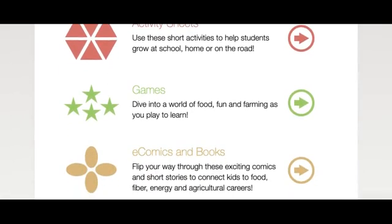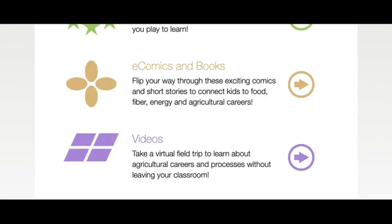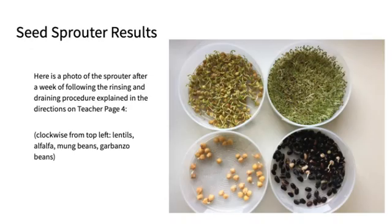In addition, you can show the videos in the extend portion of this lesson and discuss what students are seeing. Here is a photo of the seed sprouter after a week of following the rinsing and draining procedure explained in the directions. If you are having trouble getting the seeds to sprout, refer to the sprouter directions found on teacher page 4 for troubleshooting. Remember, it is best to start the sprouters on a Monday. By Friday, all the seeds should be well sprouted and students can examine the sprouts closely. After 6 or 7 days, the sprouts are likely to begin molding, and the contents of the sprouter can then be discarded and the plastic containers can be recycled when the lesson concludes.